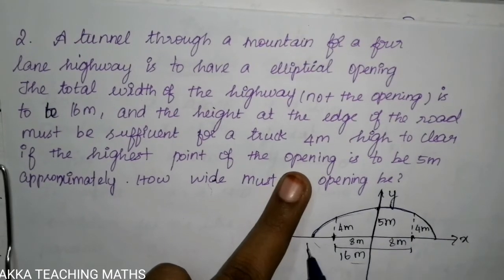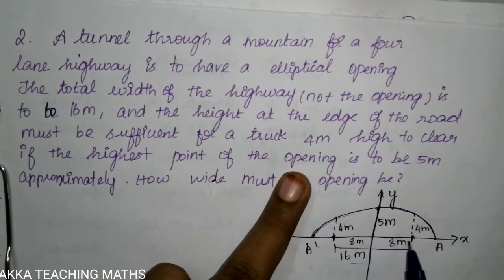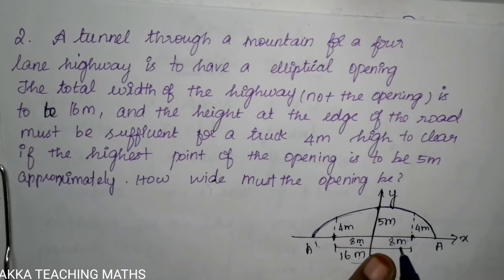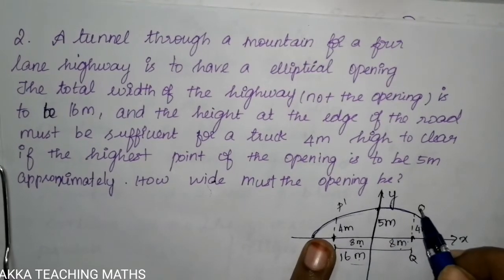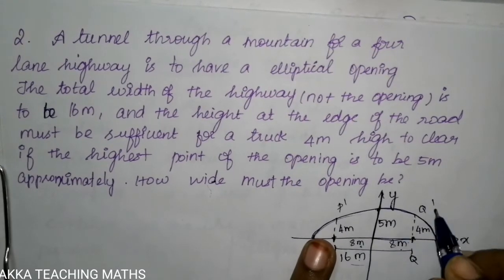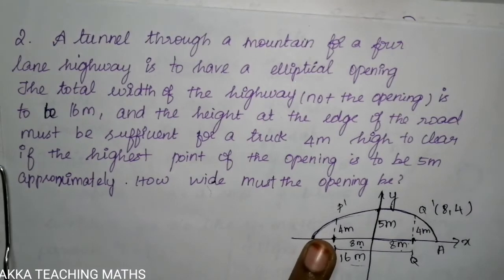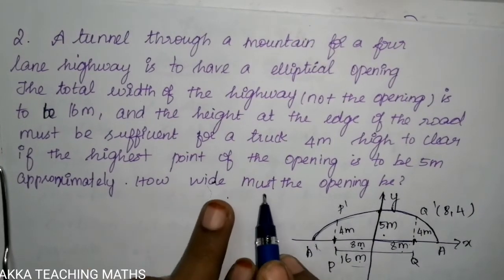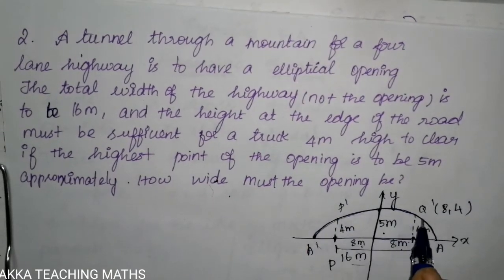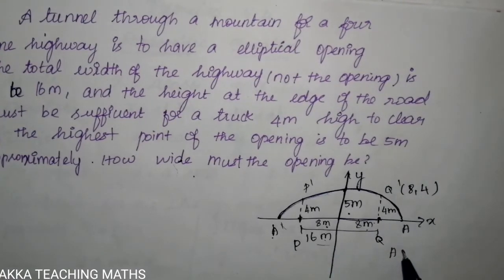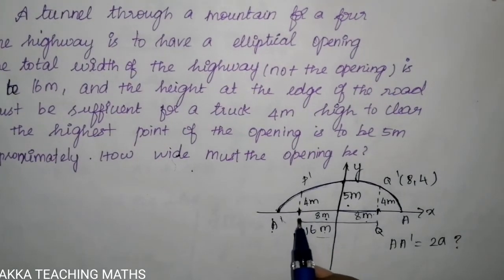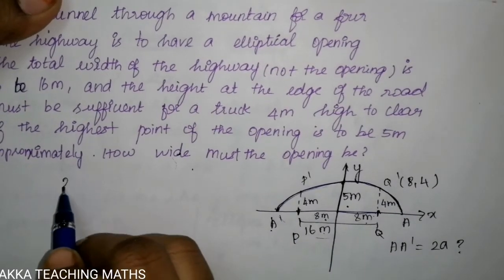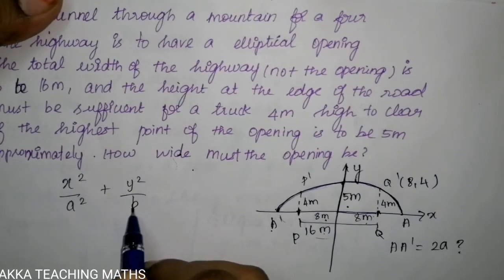So the road width A to A-dash — we know this, we can get the road width as 16, so this side is 8 and this side is 8. This is P and Q, this is P-dash, this is Q-dash. So the x-axis value is 8 and the y-axis value is 4, so this point is (8, 4). The x-axis is here, and the equation is x² / a² + y² / b² = 1.